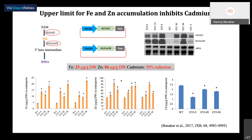We looked at how much of this iron is bioavailable for human absorption using a human Caco-2 cell assay, which is an established system to assess bioavailability. We saw an increase in ferritin and transferrin levels in cells treated with the transgenic line, suggesting that the plants we engineered indeed have higher levels of bioavailable iron.